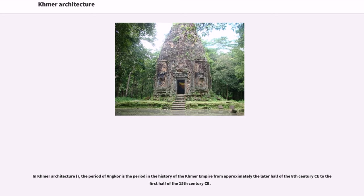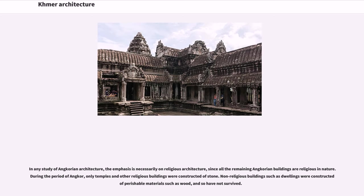In Khmer architecture, the period of Angkor spans approximately the later half of the 8th century CE to the first half of the 15th century CE. In any study of Angkorian architecture, the emphasis is necessarily on religious architecture, since all remaining Angkorian buildings are religious in nature. During this period, only temples and other religious buildings were constructed of stone; non-religious buildings such as dwellings were constructed of perishable materials such as wood, and so have not survived.